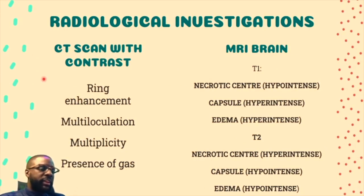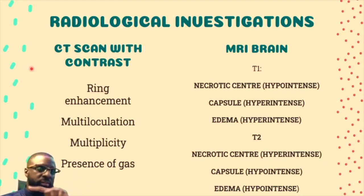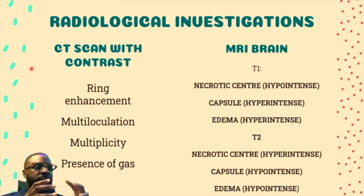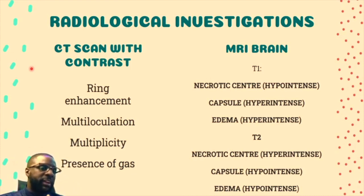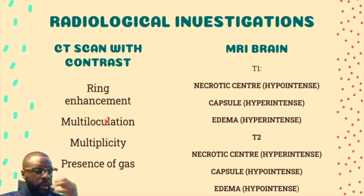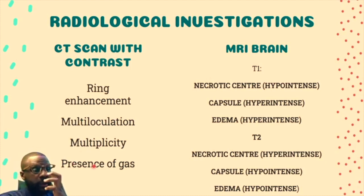For imaging: on CT, abscess formation produces a contrast ring because increased blood supply to the capsule enhances with contrast — this is ring enhancement. You should also look for multiloculation, multiplicity (because each bacterial species fights at a different stage), and presence of gas (from gas-forming organisms). A contrasted CT is required to visualise the ring; a non-contrasted scan may miss it.